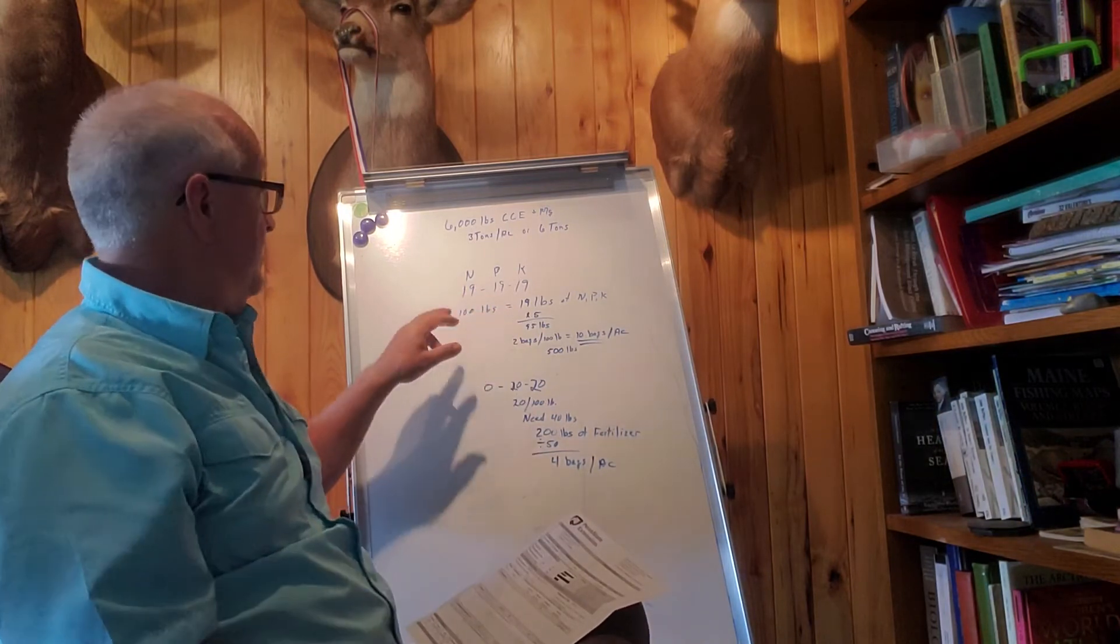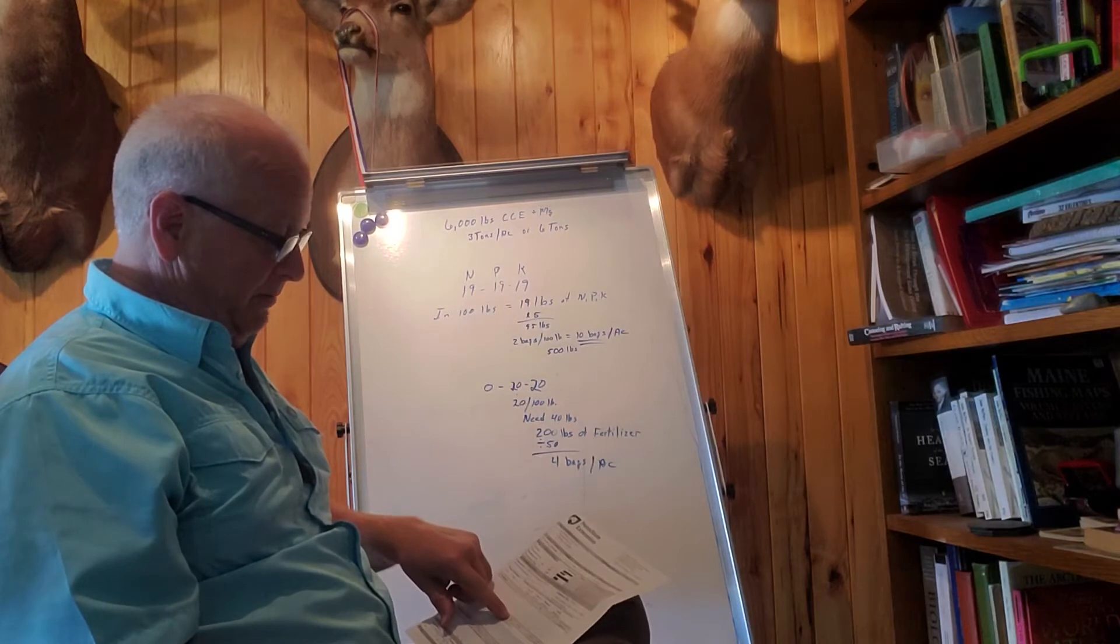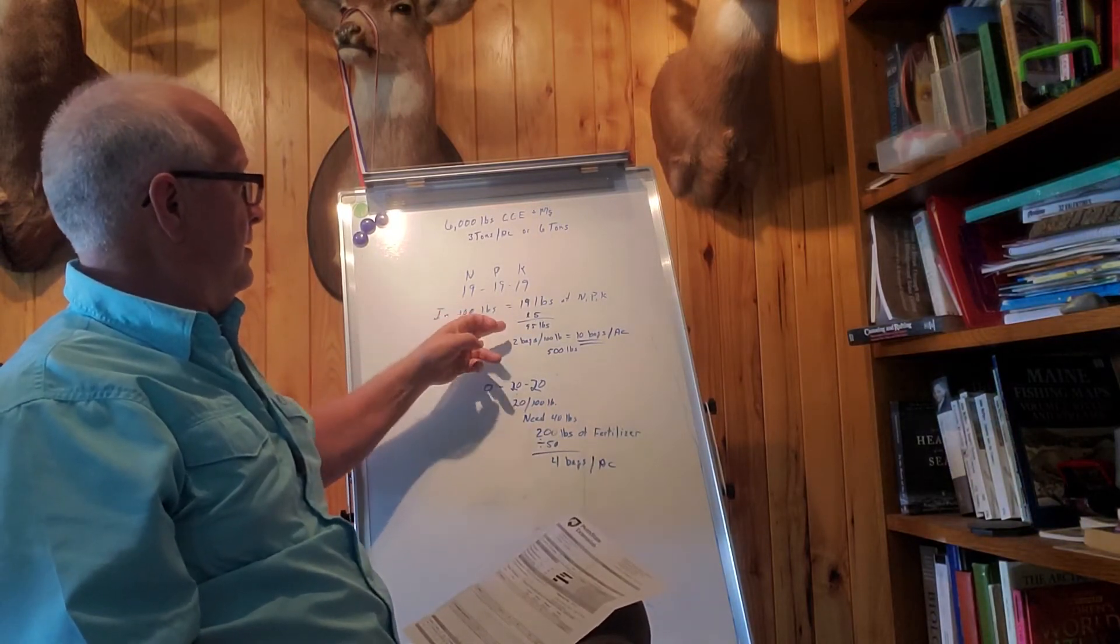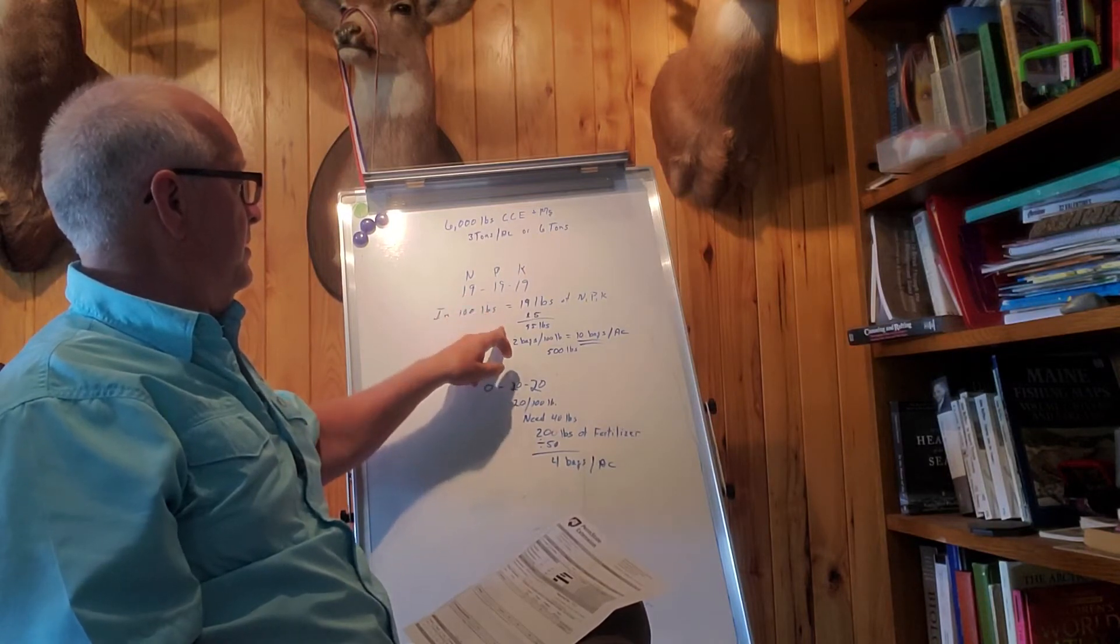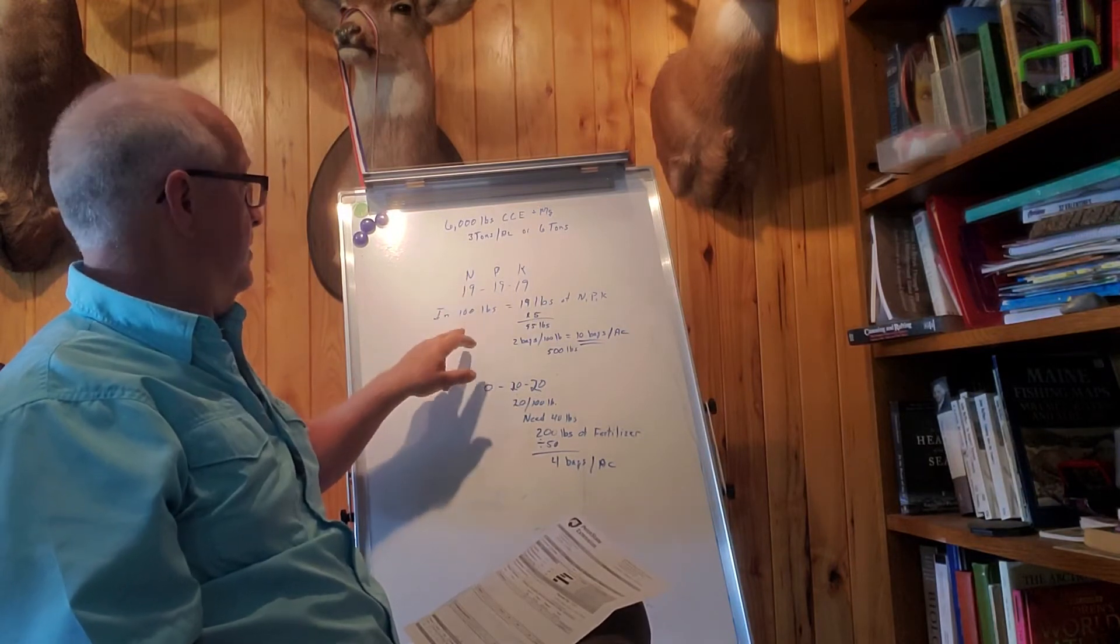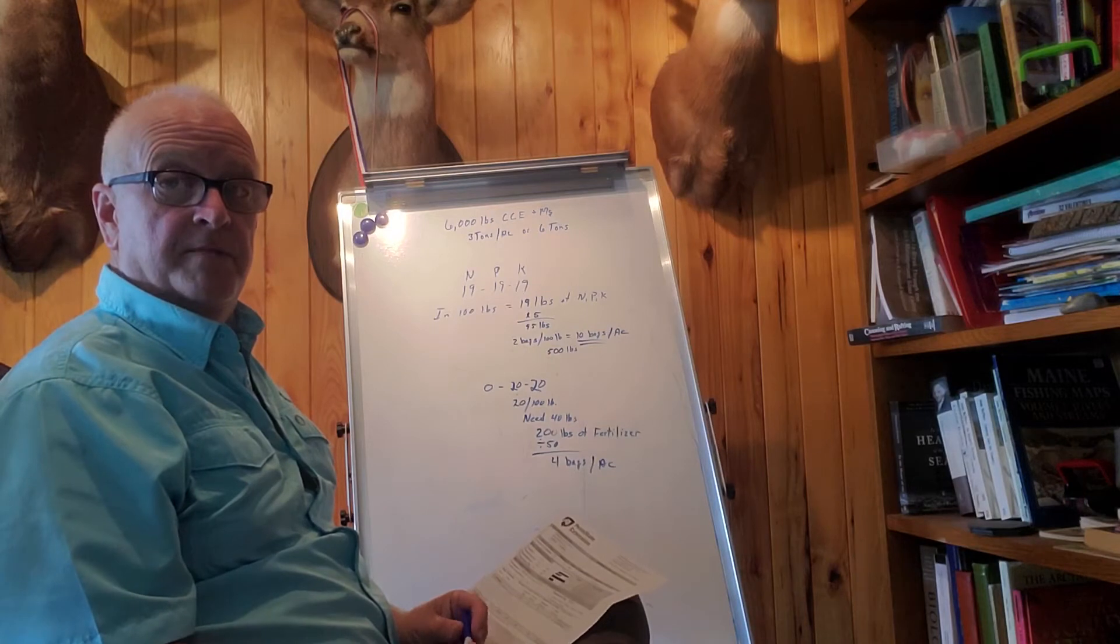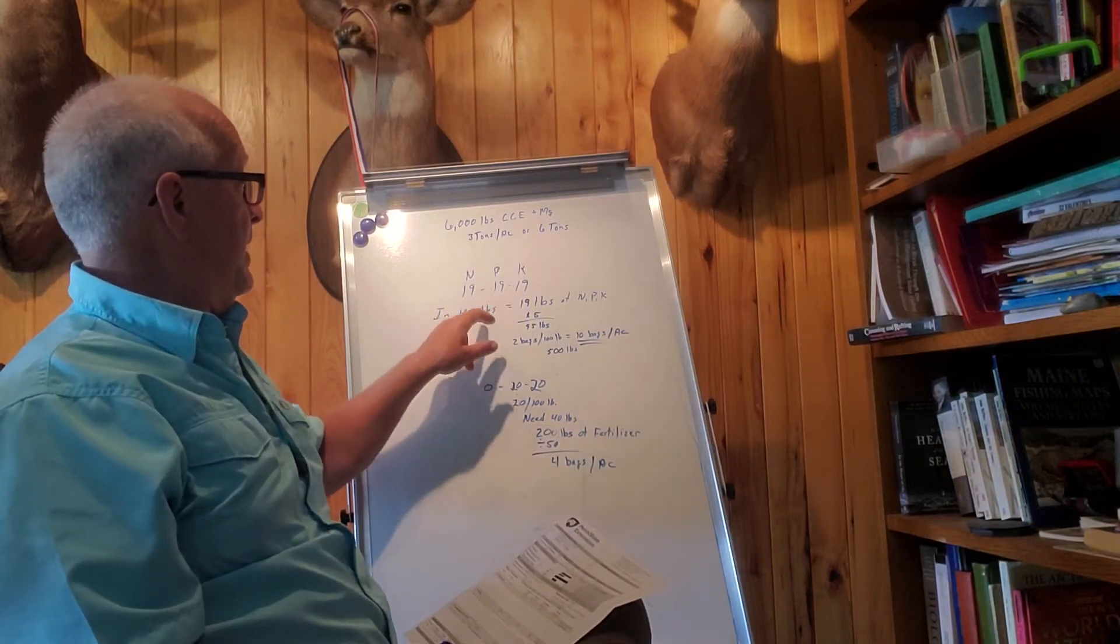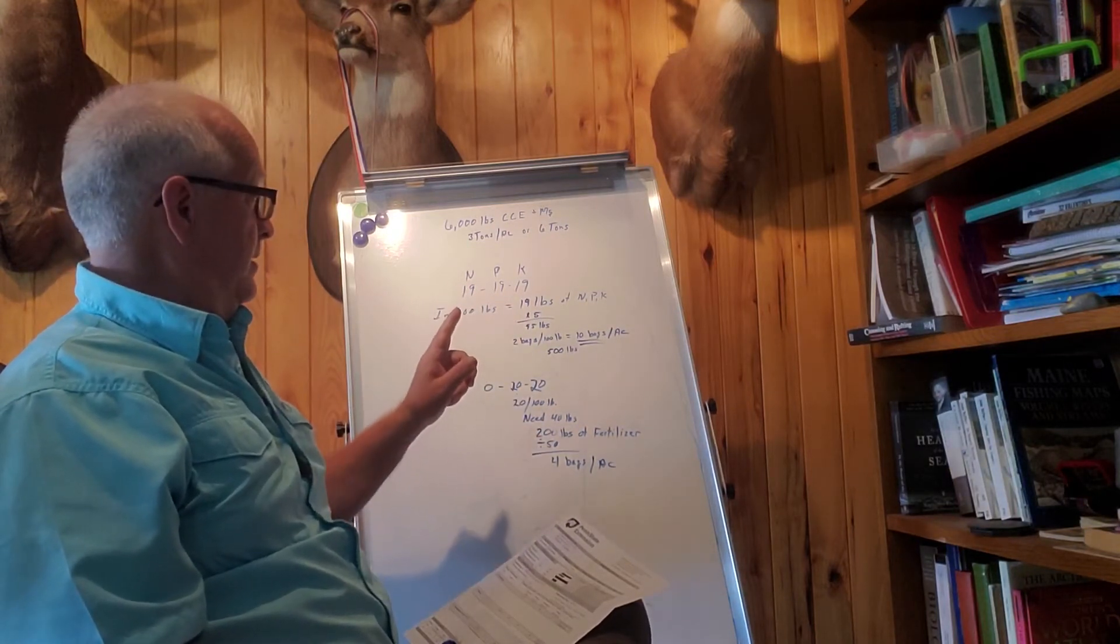Well, it's not going to come out even, so let's take the lowest number, which is 100. What that number means, if you don't know, is that in 100 pounds of this material, 19 pounds of N, P, and K each. So we have 19 pounds of nitrogen in there; we need a hundred, so that means we need...